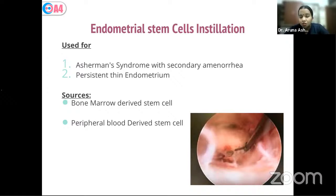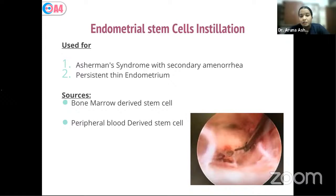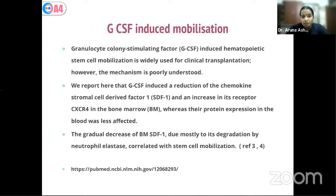For ovarian stem cell installation, mesenchymal cells from bone marrow are particularly important — the required number of mesenchymal cells can mostly be obtained only directly from bone marrow. However, for endometrial stem cell installation, peripheral blood-derived stem cells are sufficient. We look at the angiogenic cells — CD133-positive cells mobilized by G-CSF injection over three days — after which approximately 60–80 ml of peripheral blood is taken and stem cells are separated by proper protocol for endometrial installation.